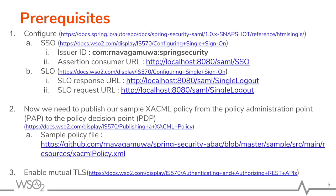The XACML3 REST API in WSO2 Identity Server can be secured in many ways, including Basic Authentication, OAuth2, Mutual TLS, etc. Since we need to do server-to-server authentication from the Spring application, and both the Spring application and WSO2 Identity Server are within a secure network, it is preferable to use Mutual TLS with self-signed certificates. Even though Mutual TLS is the supported authentication mechanism in the Spring XACML SDK, it can be extended to support other authentication mechanisms as well.